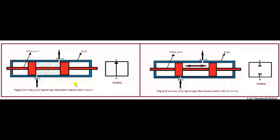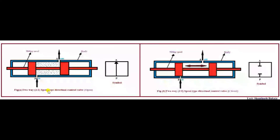We have two ports, that is inlet port P and outlet port A, as shown in the figure. This sliding spool moves in a to and fro motion, which is used to allow the flow of fluid entering into the valve and also to block the way of fluid entering into the valve.